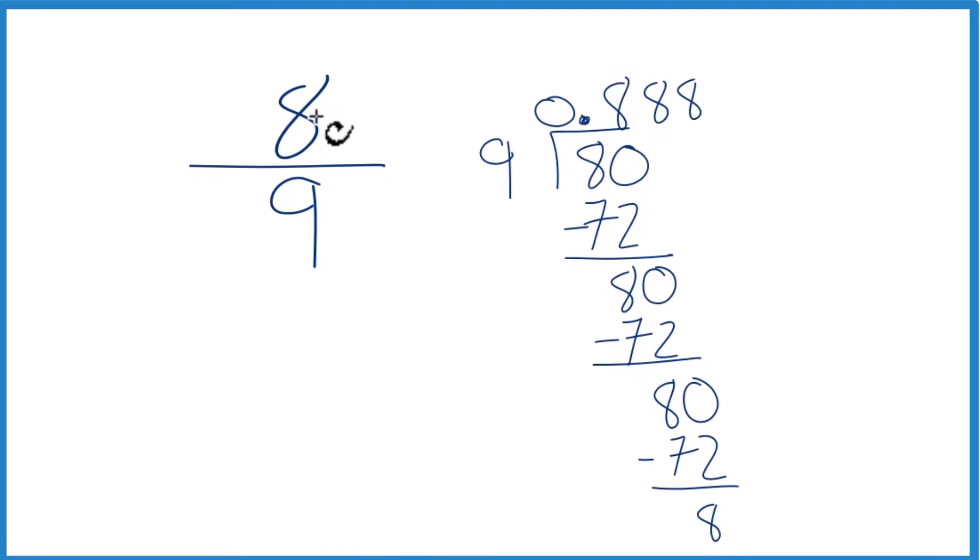So when we convert the fraction 8 ninths to a decimal, we get 0.888. And the 8s, they keep repeating. What we could do is get rid of these here and then just put a line over the 8. That would show that it repeats.